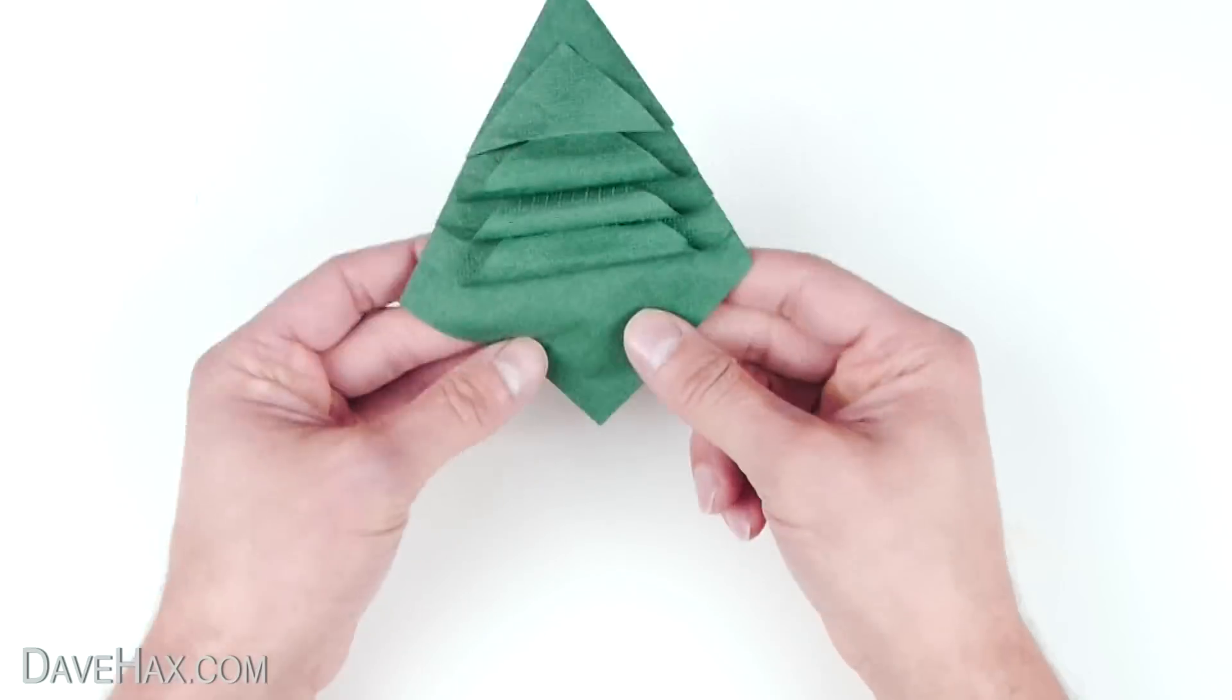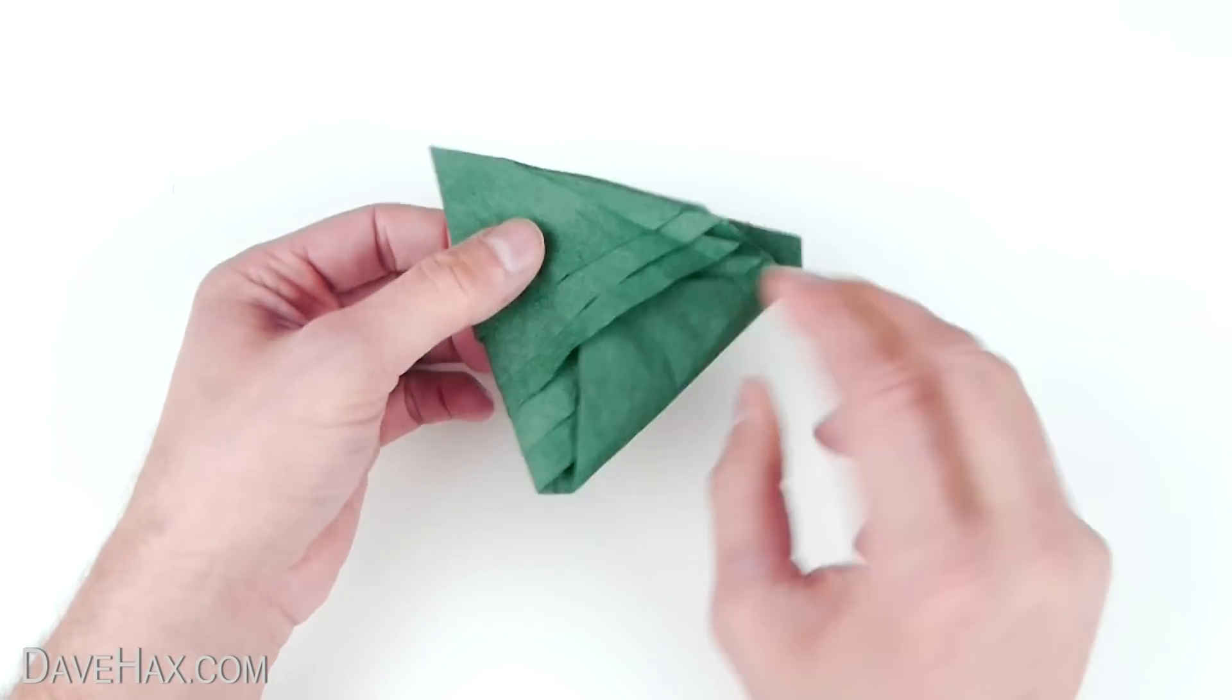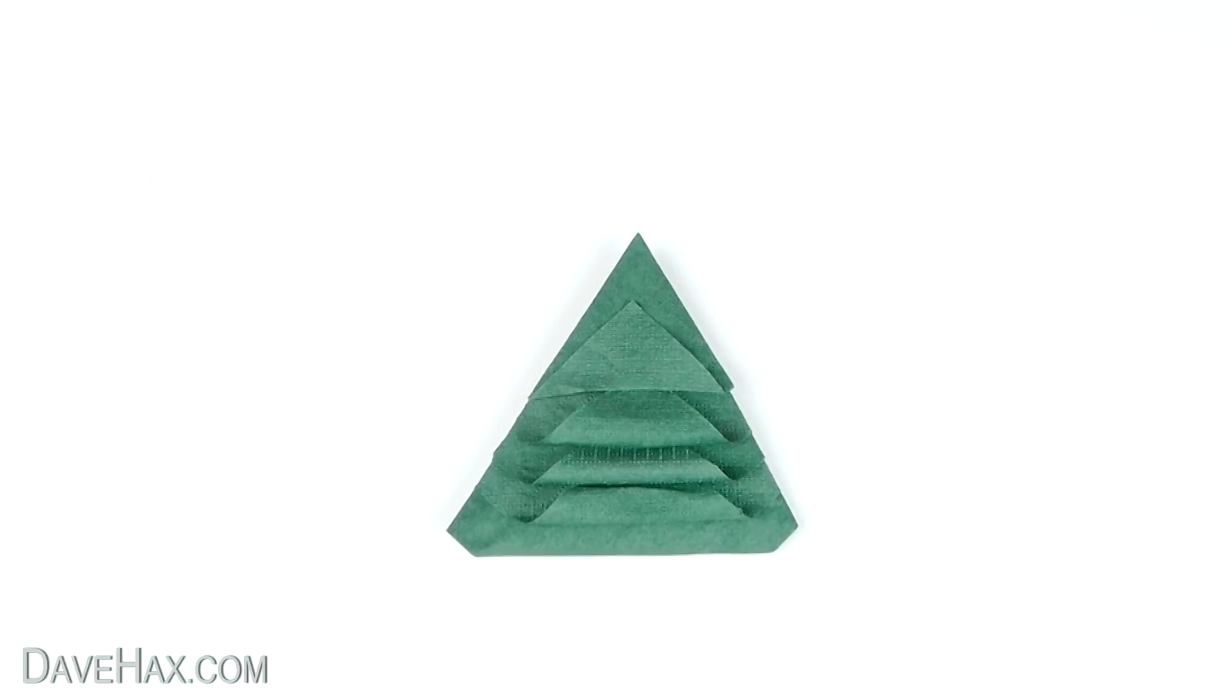And finally we're going to fold the bottom piece round to the back and tuck it under one of these flaps. And there we have our finished Christmas tree napkin. Pretty cool and perfect for the dinner table.